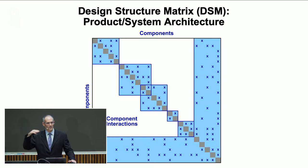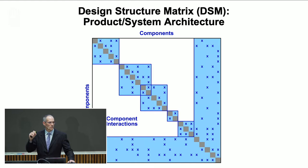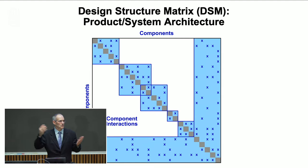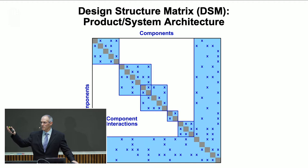The idea is that the components are not randomly connected — they have a pattern. If we can understand this network of connections, we can reveal the patterns and learn whether this is correctly architected, whether we can improve the architecture. More importantly, we have the architecture that we have, and we have to implement it — we have to integrate those components to make the system work correctly.